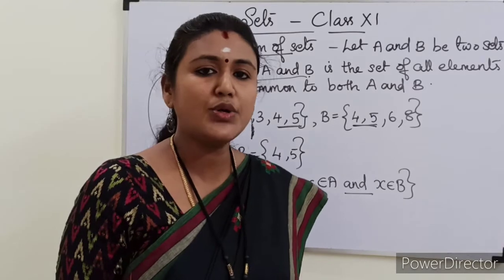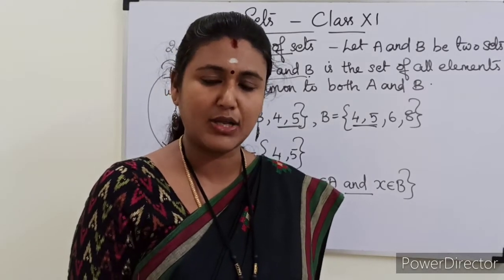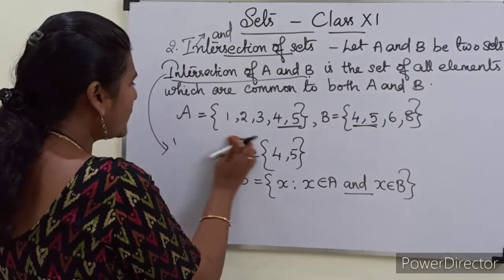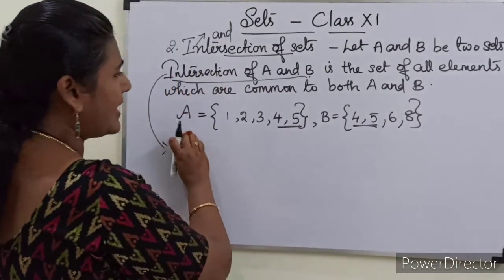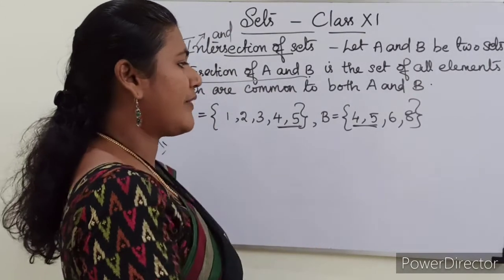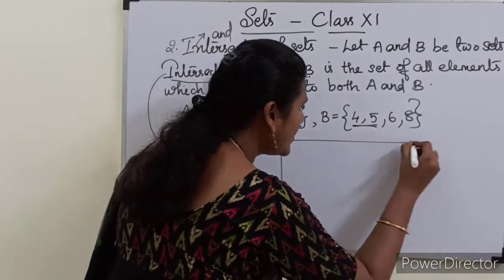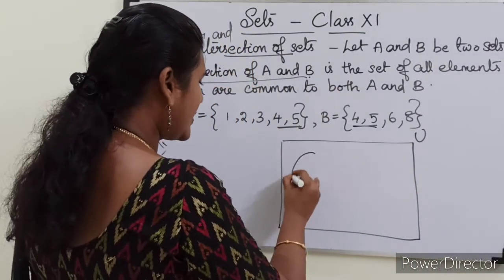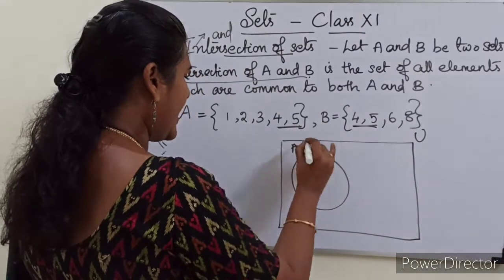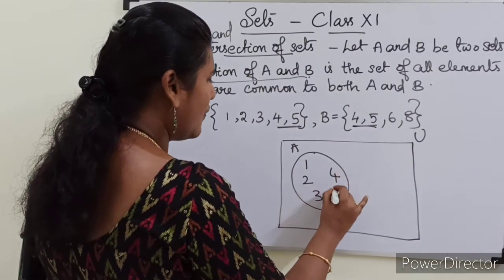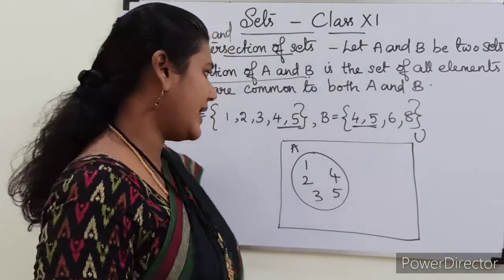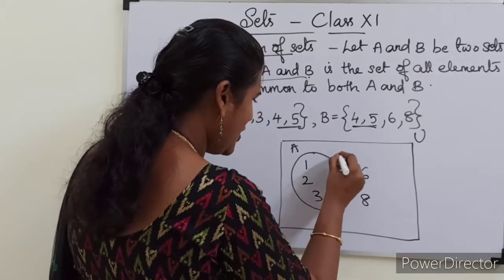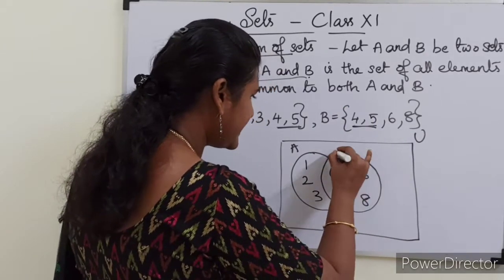Now we will see how to represent A intersection B using Venn diagram. Taking the same example: A is equal to {1, 2, 3, 4, 5} and B is equal to {4, 5, 6, 8}. First we will draw the universal set as a rectangle, and we will denote set A and set B with their respective elements — elements of A are 1, 2, 3, 4, 5 and elements of B are 4, 5, 6, 8.